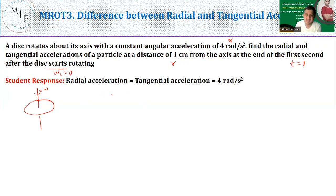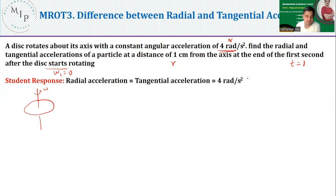A student might say: acceleration is given, nothing special here — it keeps rotating with uniform acceleration and won't stop. But this raises the question: is the given acceleration radial, tangential, or both? This is not clear to many students and they make lots of mistakes here. This is a misconception — that answer is incorrect.